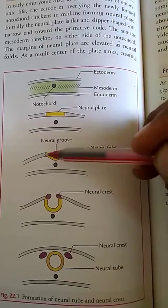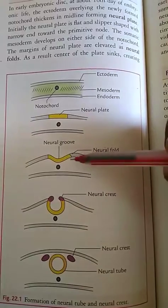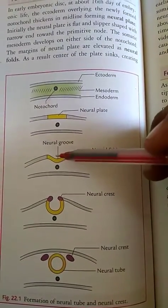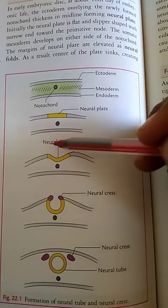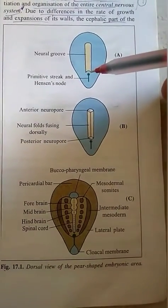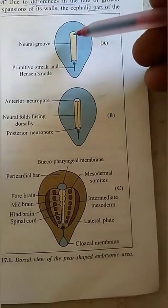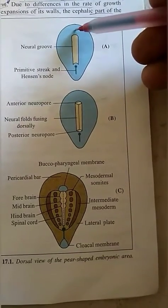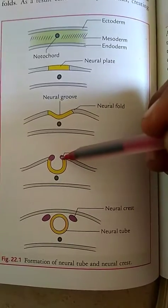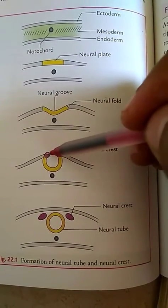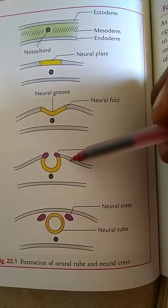The lateral ends of this neural plate get elevated and form the neural folds. Due to formation of neural folds, a longitudinal groove appears in the neural or medullary plate, which is known as the neural groove. The neural groove extends in the mid-dorsal line from the primitive node up to the buccopharyngeal membrane. The tips of the neural folds are bordered by specialized neuroectodermal cells known as neural crest cells, which are continuous with the surface ectoderm.